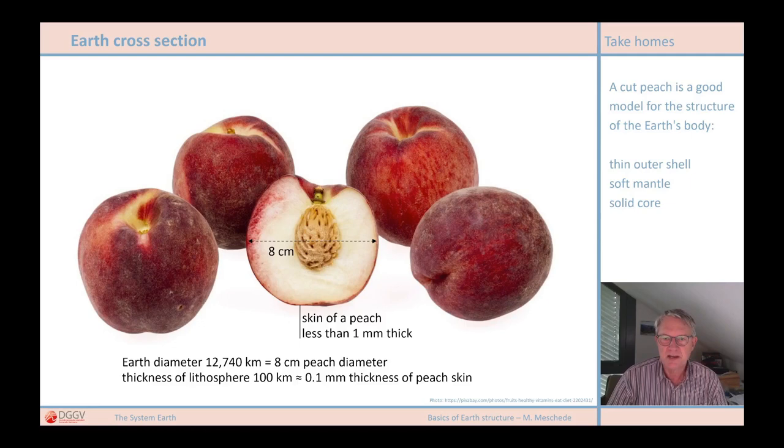The Earth has a diameter of 12,740 km, and we now compare that with a diameter of 8 cm of a peach. The solid skin of the Earth is what we call the lithosphere, meaning everything that is definitely solid on the outside. I will explain this structure in more detail in a later video. This lithosphere is on average roughly estimated to be approximately 100 km thick.